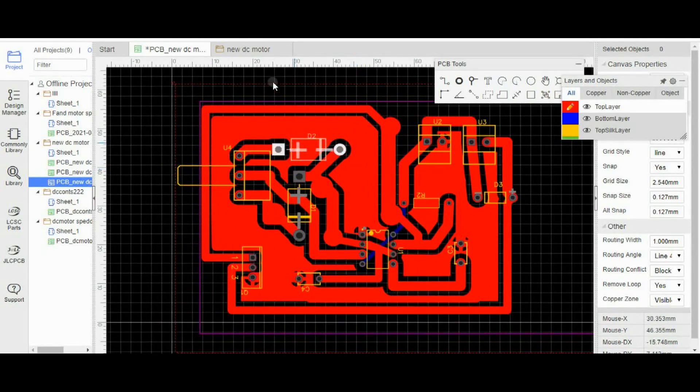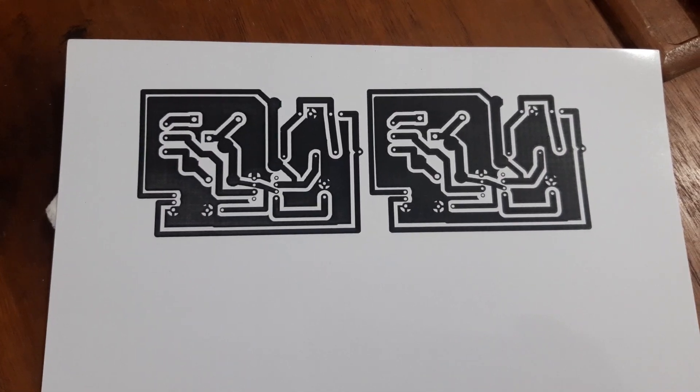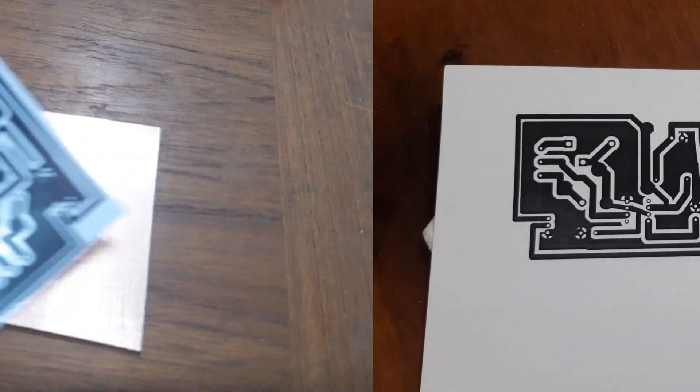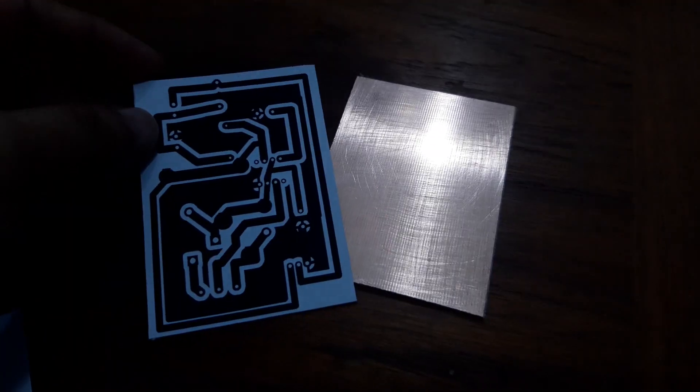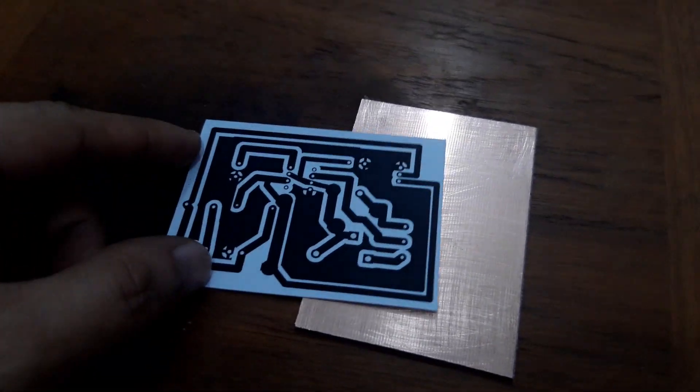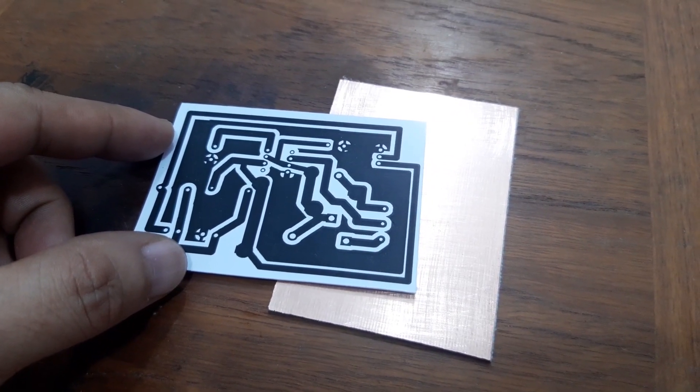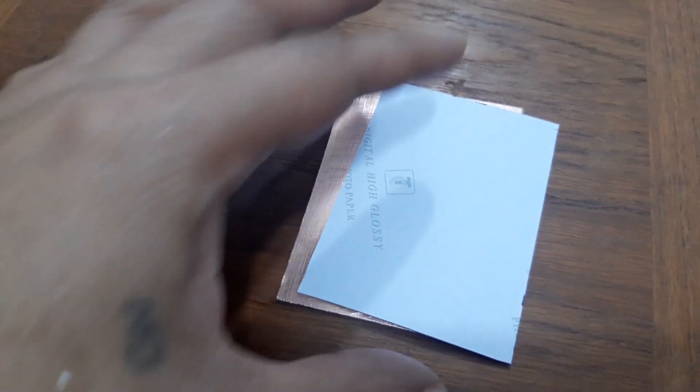Now we will print this layout so that we can continue. So now it's printed and this is it. We are going to transfer the image on the PCB using heat transfer technique by applying heat using an electric iron.